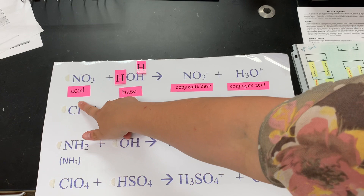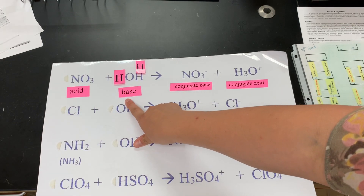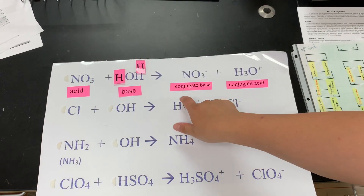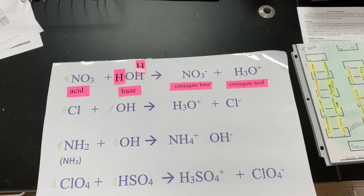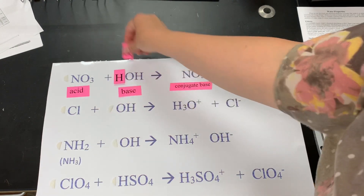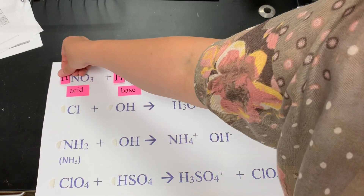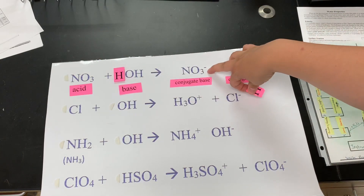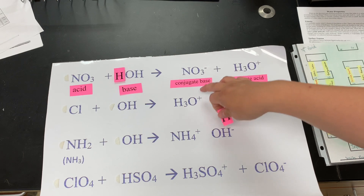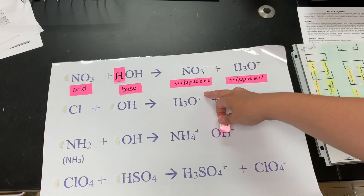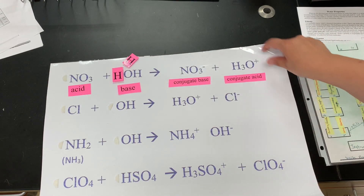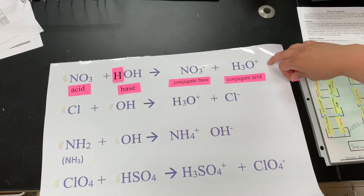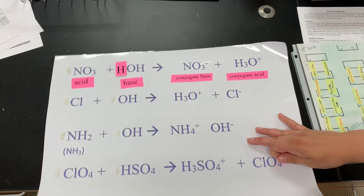Remember: the acid is the one that gives the hydrogen away; the base is the one that accepts it. The conjugate base is the acid after giving away its hydrogen — it no longer has it, so now it's the base. The conjugate acid is the one now holding the hydrogen. HNO₃, once it loses its hydrogen, is capable of taking a hydrogen again, making it a conjugate base. The water, now holding an extra hydrogen as H₃O⁺, can very easily give that away, making it the conjugate acid.